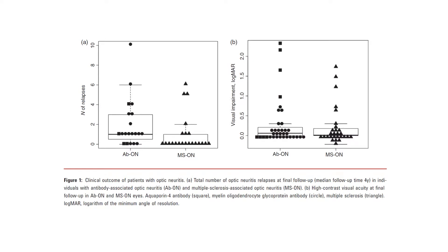In this study, we found that long-term visual impairment occurred in 40% of children with a relapsing demyelinating syndrome and one or more episodes of optic neuritis. Children with antibody-associated disease suffered more frequent relapses of optic neuritis than children with MS, as shown on the left figure, but did not have significantly worse visual outcomes, as shown on the right figure.